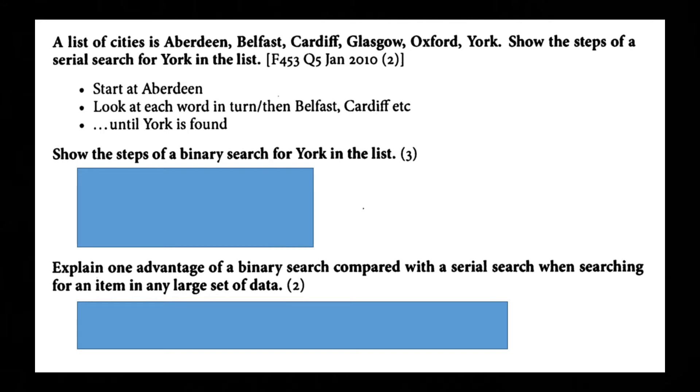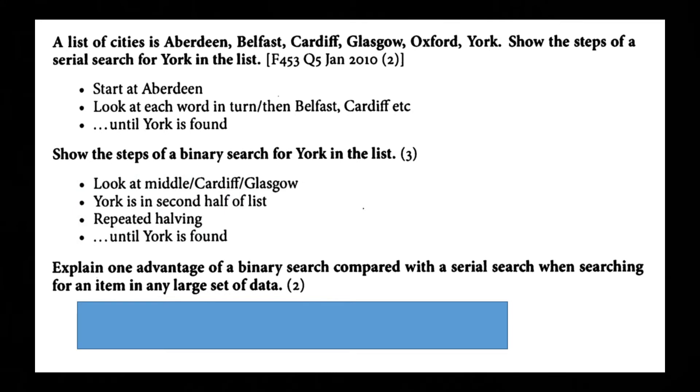Show the steps of a binary search for York in the list. Look at the middle. So Cardiff and Glasgow. Since those two are actually in the middle you can even actually just pick one of those. So look at the middle. So that would be Cardiff. York is second half of the list. So you split the list in half. Then half. Then middle. Then you repeat the half until York is found.